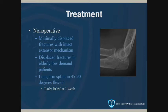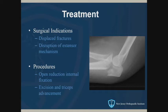Also, in an elderly patient — say 85 to 90 years old — even if displaced, it's been shown that non-operative management does pretty well, as opposed to subjecting them to surgery and hardware complications. Non-operatively, you put them in a long arm splint at 45 to 90 degrees and start range of motion in a week. Surgical indications are displaced fractures or loss of function. The procedure is typically open reduction internal fixation using a tension band construct with K-wires and a wire, or a plate or screw. Rarely, we'll do an excision and triceps advancement if the piece is too small to reconstruct.